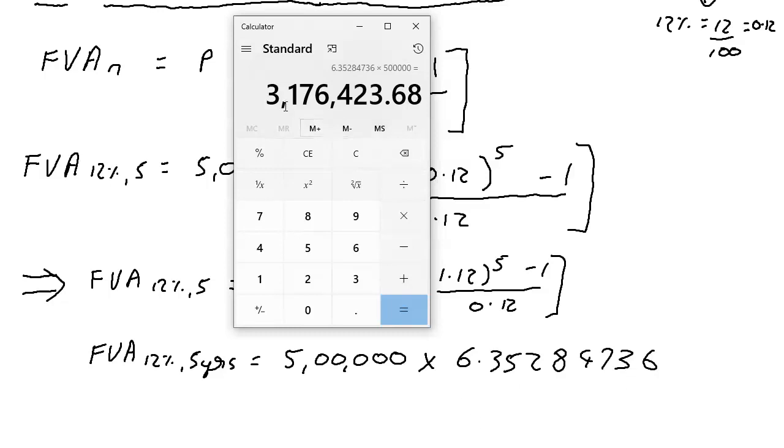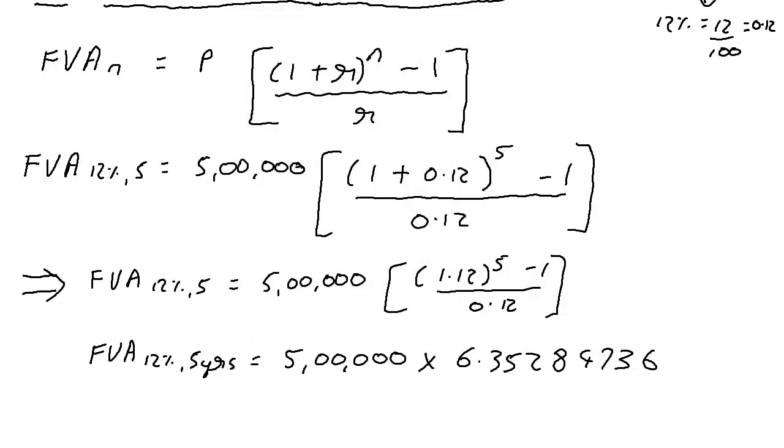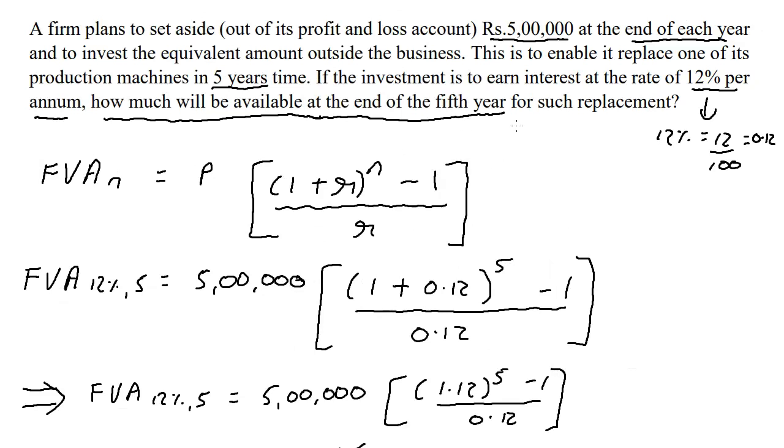So what is this number? 31 lakhs, 76 thousand, 423.68. So our future value annuity for 12 percent and five years, when five lakhs is saved at the end of every year.